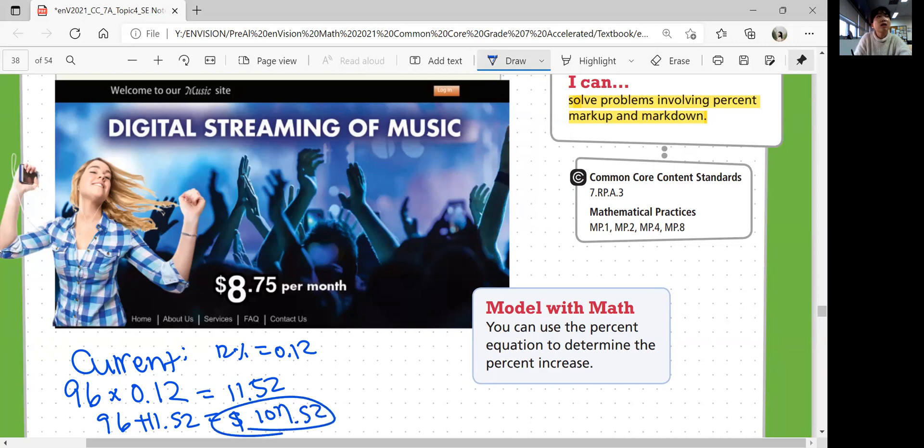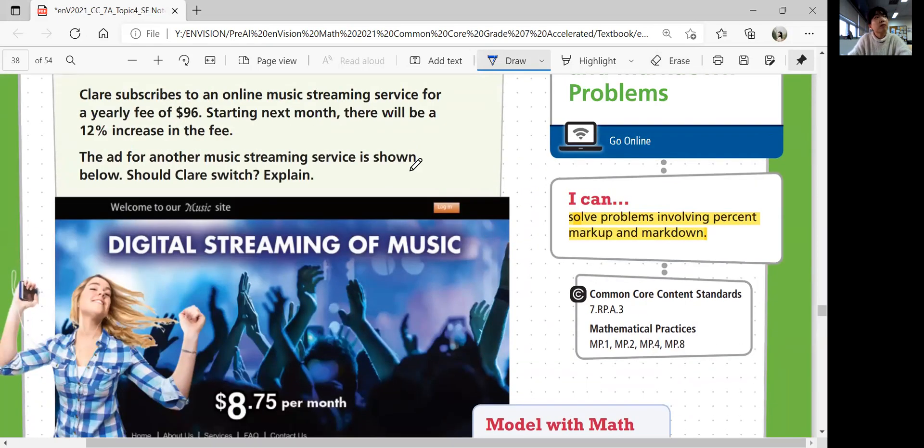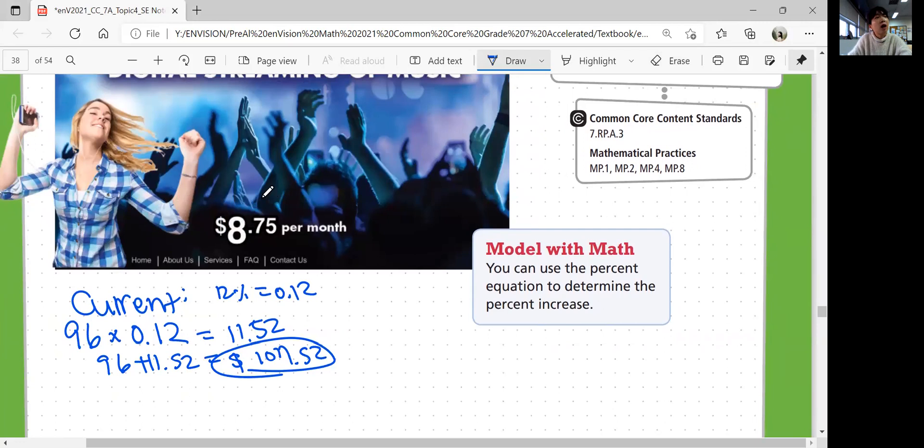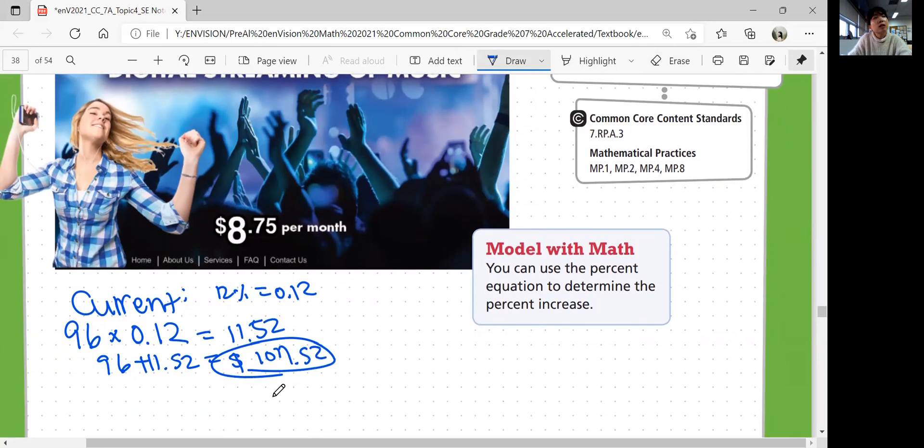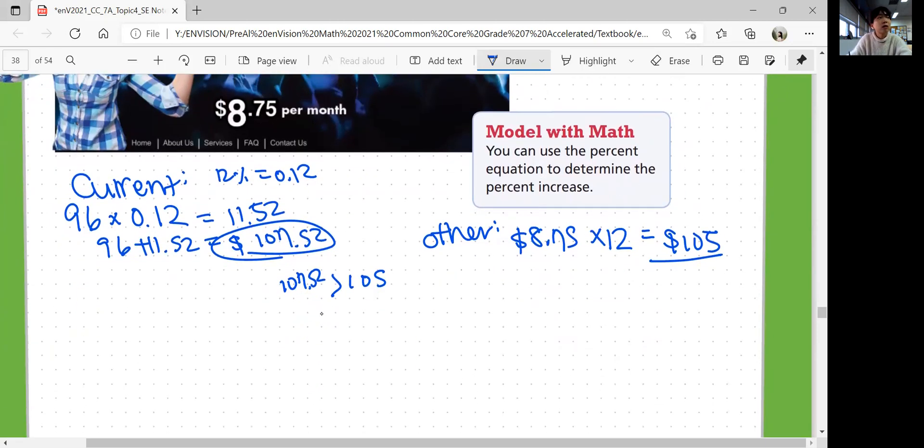Her current plan is going to be $107.52 per year. The ad says it's $8.75 per month, but how much does it cost per year? If you multiply that by 12, you get $105. The other plan is cheaper because $105 is less than $107.52. So she should switch.